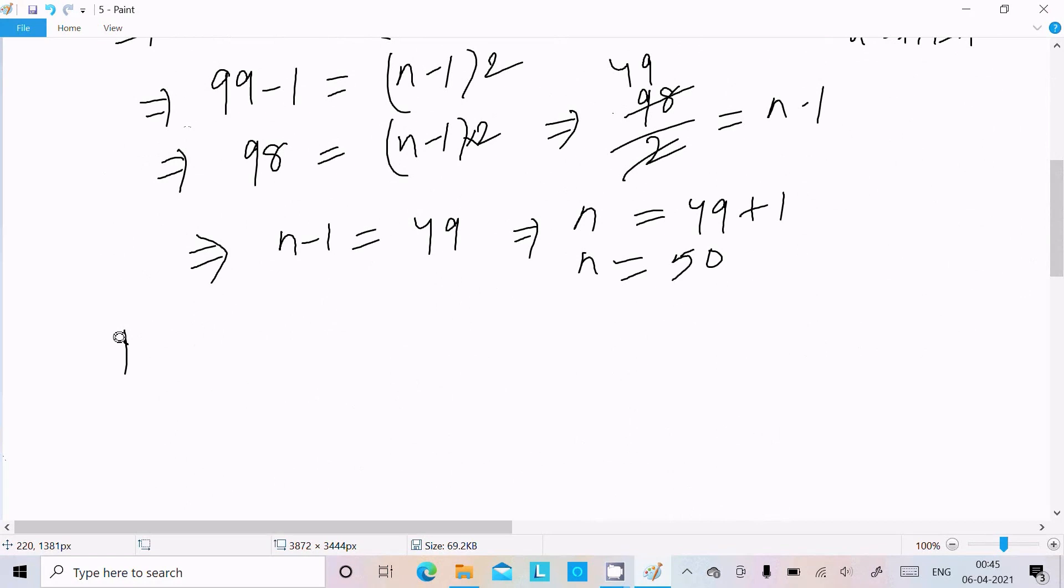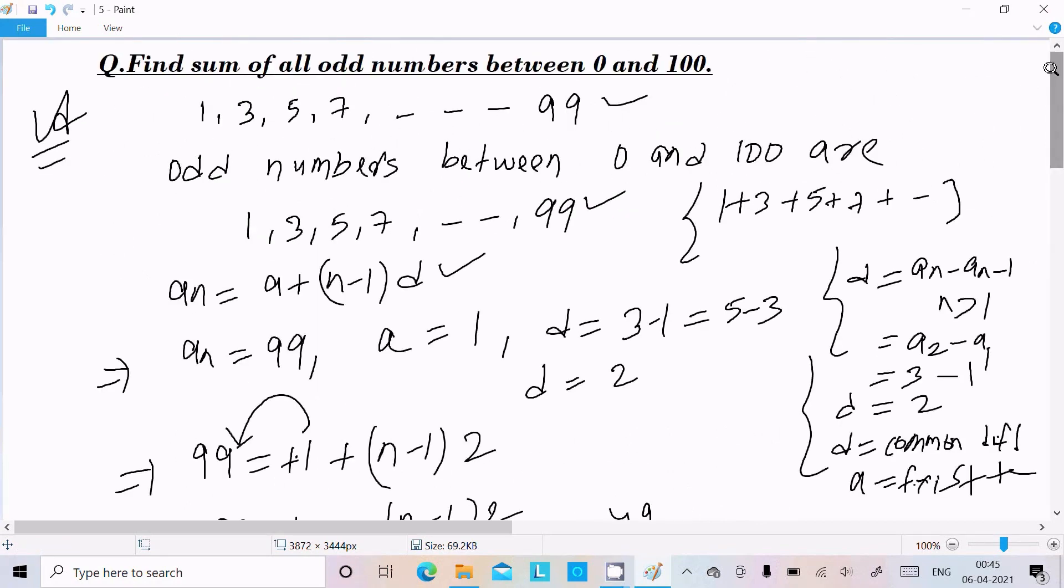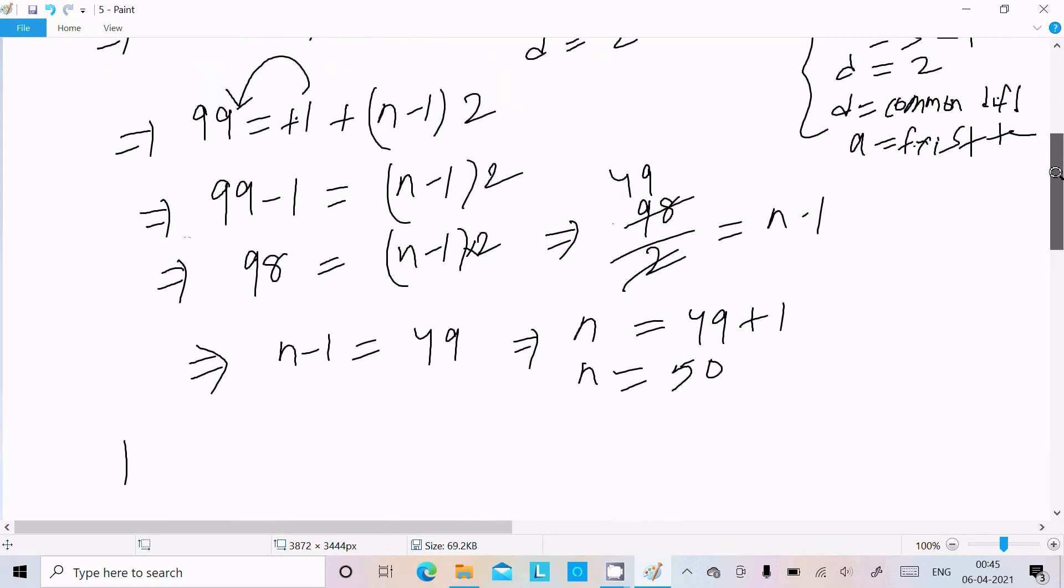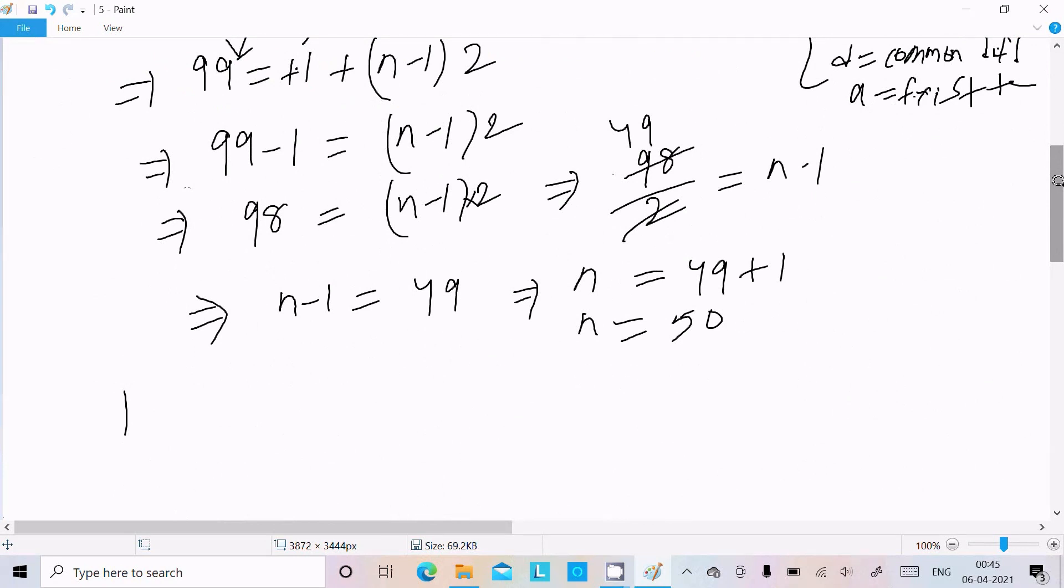Now we need to calculate the required sum. The sum formula is: Sn = (n/2) × (first term + last term).